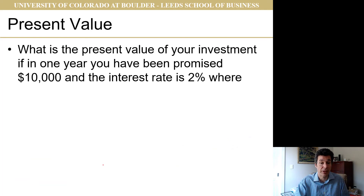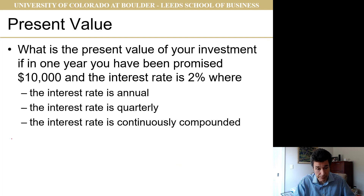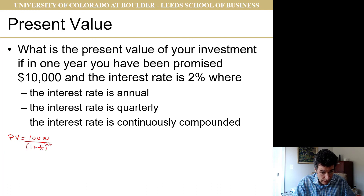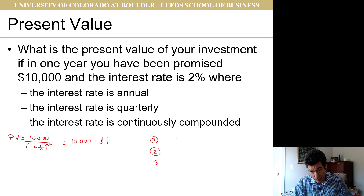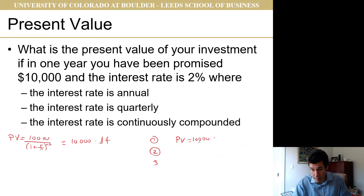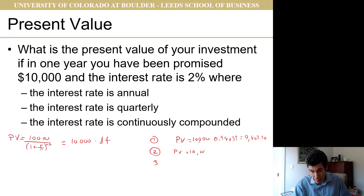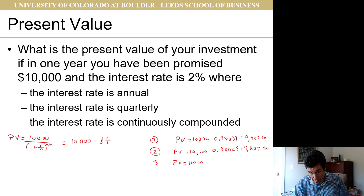Present value: what's the present value of an investment in one year if you've been promised $10,000 and the interest rate is 2%? Present value is $10,000 divided by (1 + r/n) to the Nt, or $10,000 times the discount factor. Version 1 (annual): $10,000 times 0.98039 equals $9,803.90. Version 2 (quarterly): $10,000 times 0.98025 equals $9,802.50. Version 3 (continuous): $10,000 times 0.98020 equals $9,802.